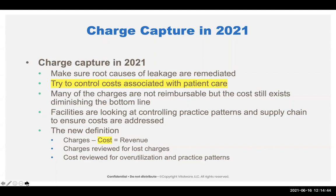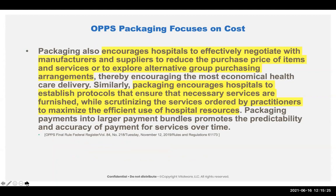Charges reviewed — we're looking for lost charges, over-utilization patterns, and practice pattern costs. Major medical systems now have laboratory utilization policies that prevent doctors from ordering anything they want. Instead of getting a comprehensive metabolic panel every morning, they're now saying for a renal patient you need the BUN, creatinine, potassium, and sodium — don't get everything. We're seeing more and more cost utilization in supply chain and pharmacy as well.